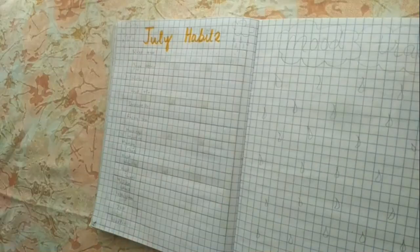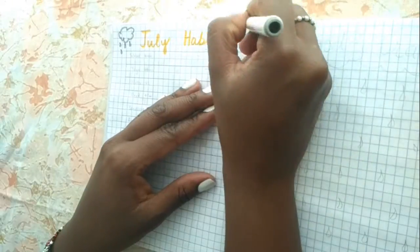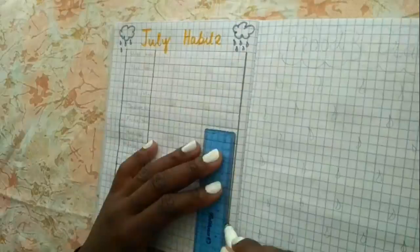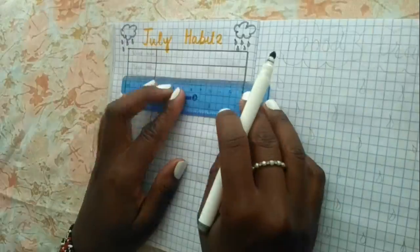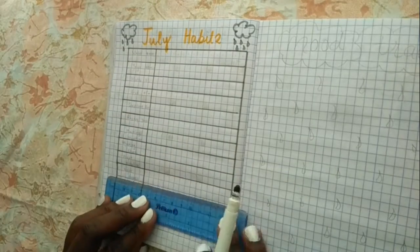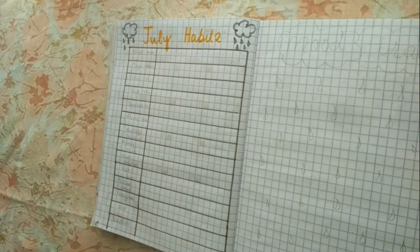For my habit tracker, it is the same one that has been working very well for this notebook, so that's what I'm going to create here. It's just the same old one. The only difference is that it's now July and it has some rain doodles on it.